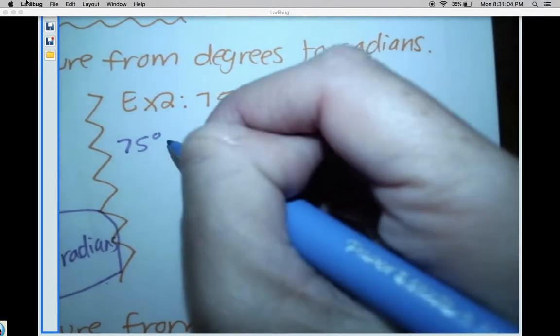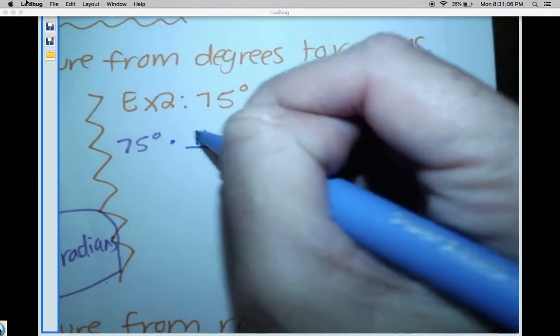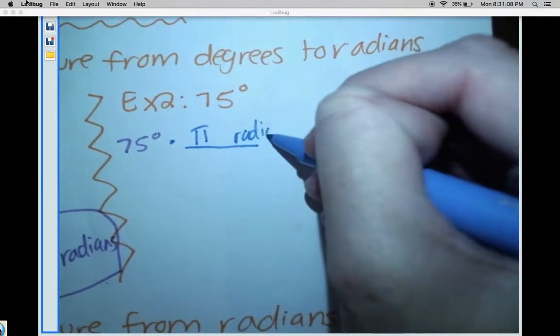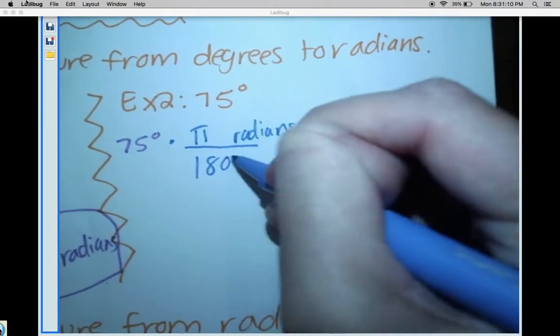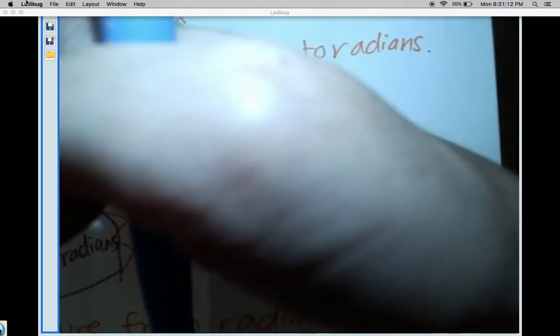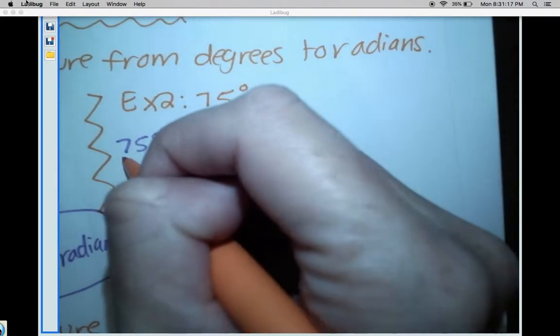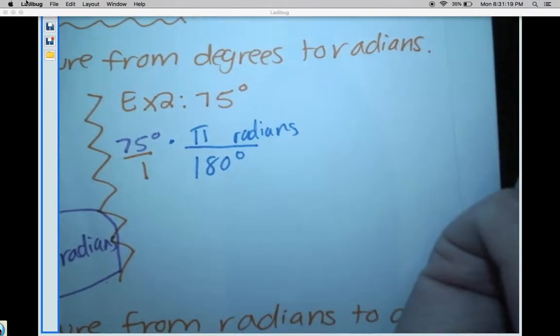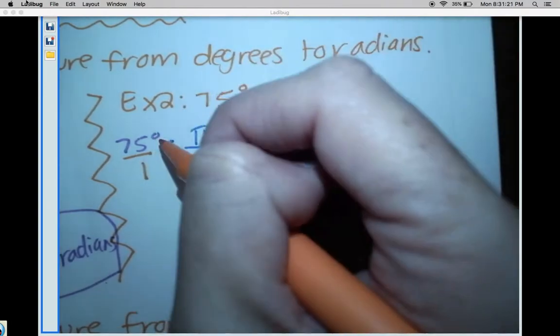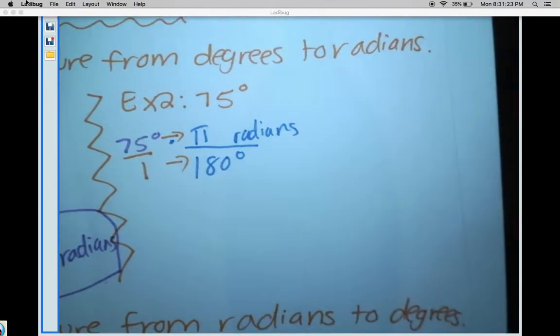...it by π radians over 180 degrees, and that will cause my degrees to cancel out. Since we're dealing with fractions, I'm gonna put 75 over 1 so it's easier to multiply. Remember, with fractions you go straight across, and our degrees will cancel out.